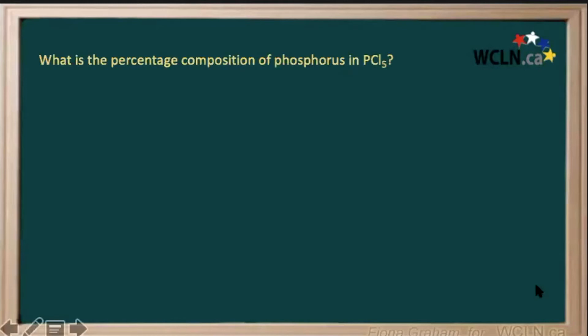The question is asking what is the percentage composition by mass of phosphorus in phosphorus pentachloride? To answer this, we first calculate the mass of phosphorus in our compound, and then find the ratio of that mass to the mass of our whole compound.